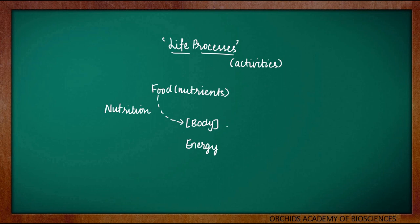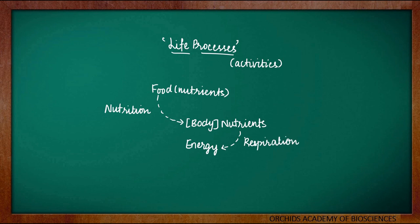Through the process of nutrition, our body gets nutrients. Now, these nutrients will be utilized to provide energy for the body. The process in which nutrients are broken down to release energy for various cellular needs is called as respiration, and this forms the second life process. In the process of respiration, we human beings require oxygen, whereas certain other organisms do not require it. But for the process of respiration in our body, we require oxygen.